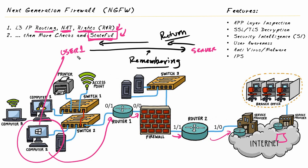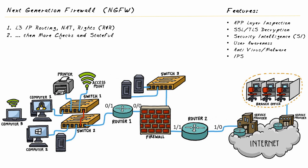Pretty much any layer 3 firewall uses routing, address translation, and permissions for the initial traffic flow, and is stateful — dynamically allowing reply traffic back in. All those functions are not yet NGFW material; that's the basic functionality of any stateful firewall. What brings it up to next-generation firewall functionality is additional checks the firewall performs — including application layer inspection — to make sure traffic going through aligns with company policy.